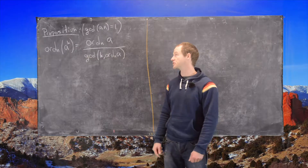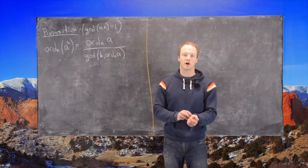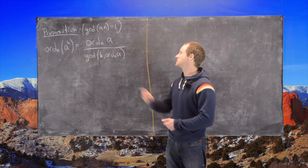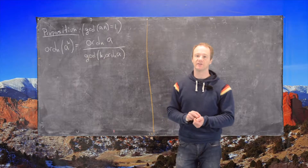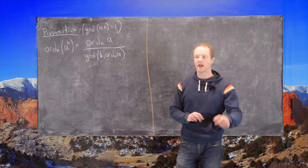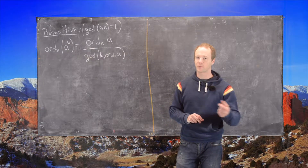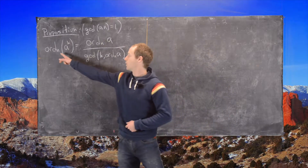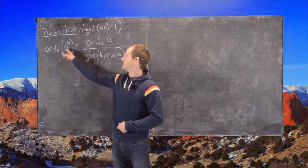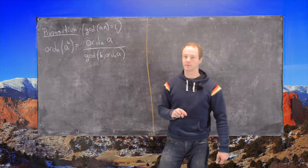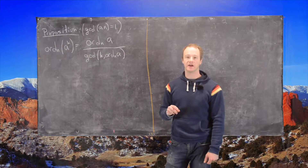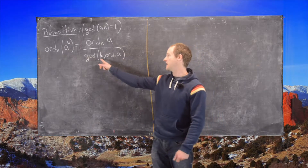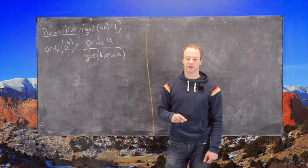In this video we're going to look at the following proposition. It relates the order of a power of an element with the order of the original element. We're going to start with the GCD of a and n equals 1, where a and n are appropriate natural numbers or integers as needed. The order modulo n of a to the kth power equals the order modulo n of a, divided by the GCD of k and the order of a modulo n.